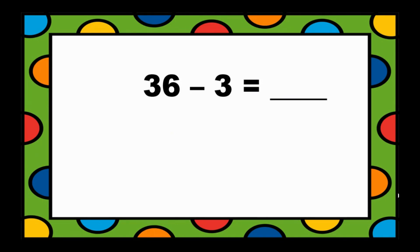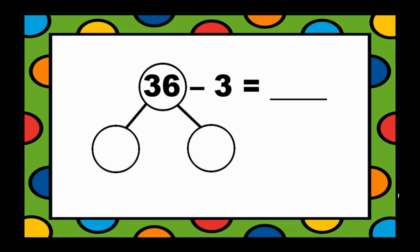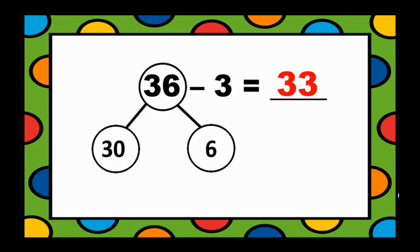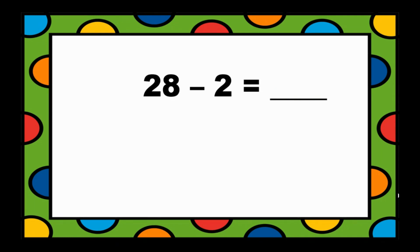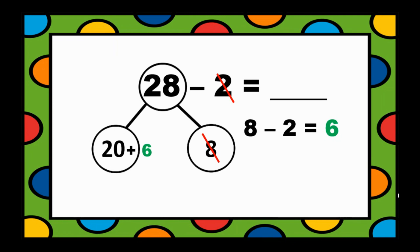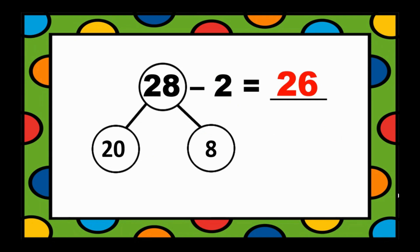How about 36 minus 3? Using number bonds to make 36: 30 and 6. Subtract the 1s: 6 minus 3 equals 3. Add 3 to 30: 30 plus 3 equals 33. So, 36 minus 3 equals 33. And 28 minus 2 — number bonds to make 28: 20 and 8. Subtract: 8 minus 2 equals 6. 20 plus 6 equals 26. So, 28 minus 2 equals 26.